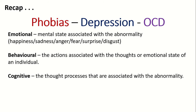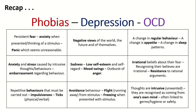Behavioural characteristics are probably the easiest to identify because we can physically observe a person's behaviour — the actions associated with phobias, depression, and OCD. Cognitive characteristics are probably the most difficult because they are the thought processes associated with each abnormality, which we can only recognise through self-disclosure — the patient telling us what they are currently thinking. I'd like you to highlight these characteristics and associate them with phobias, depression, and OCD — identifying not only which condition each belongs to, but whether it is emotional, cognitive, or behavioural.